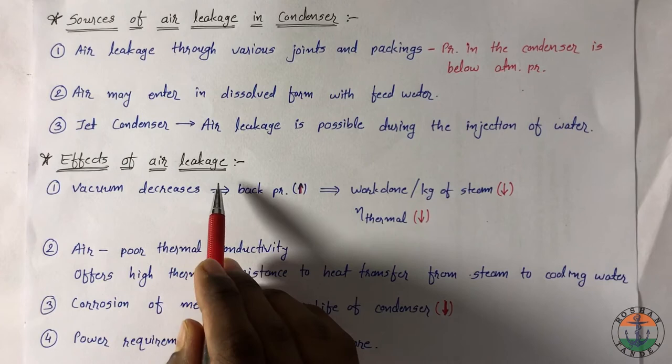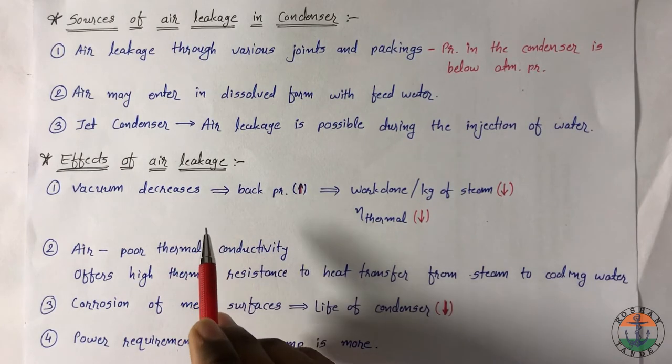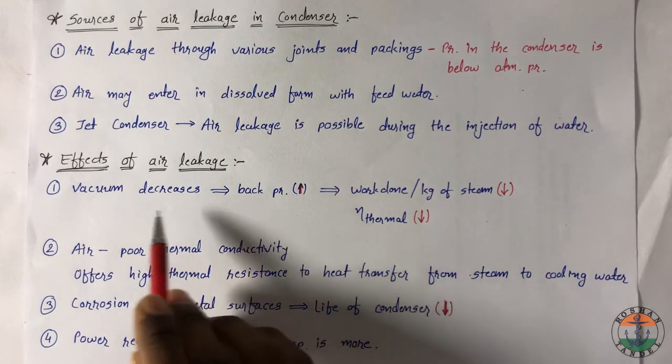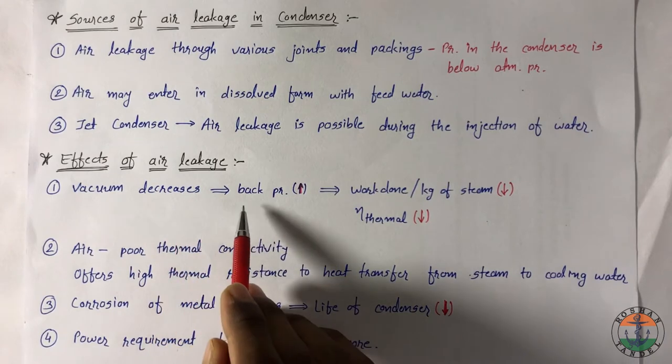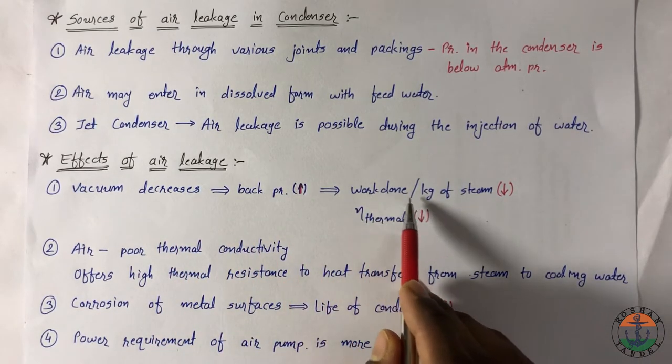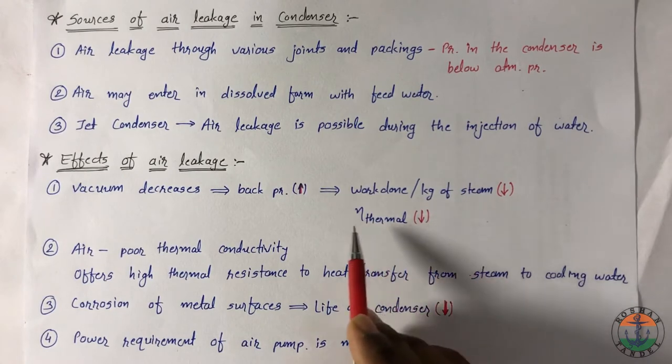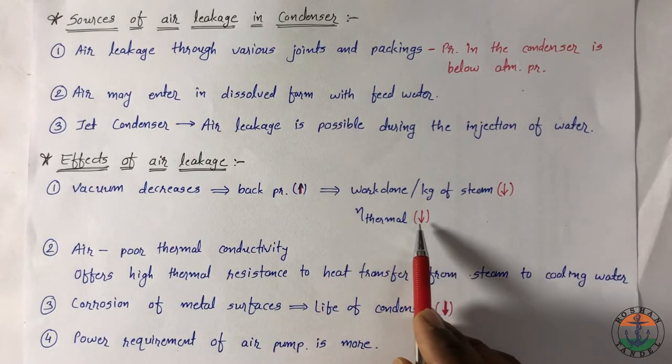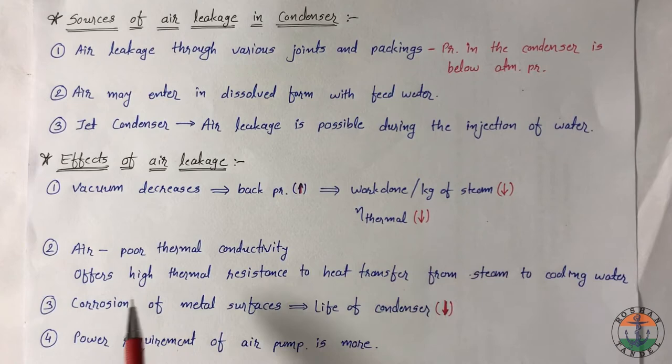Effects of air leakage. Because of air, vacuum in the condenser decreases, so back pressure increases. This reduces the work done per kg of steam and also the thermal efficiency of the plant. Condenser is basically a heat exchanger.